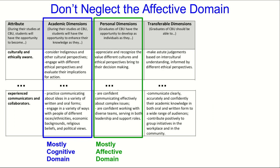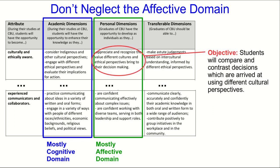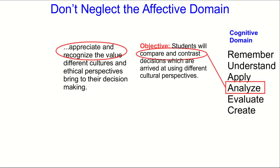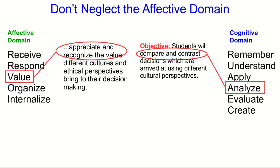Let's look at something in the personal dimensions and see if we can make a reasonable objective out of it. Here's a proposed objective I could make from this item in the personal dimensions. However, if you're paying close attention — and particularly if you're an aficionado of Bloom's taxonomy — you might not like what I just did. I took a statement that started with 'appreciate and recognize the value of' and replaced it with an objective using the words 'compare and contrast.' Compare and contrast is definitely cognitive domain, usually placed at the analyze level, whereas 'appreciate and recognize value' would be at the value level of the affective domain. So I've taken something affective and turned it into a cognitive objective.